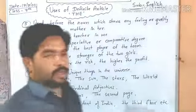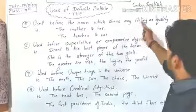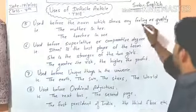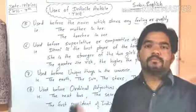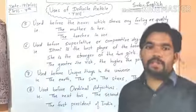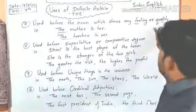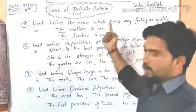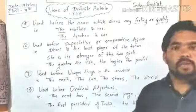The fifth use: 'the' is used before a noun which shows any feeling or quality — ऐसे noun के पहले जो कोई भावना या गुण को show करते हैं। For example: 'The mother in her' — उसके अंदर एक माँ है। 'The teacher in me' — मेरे अंदर एक शिक्षक है। So feelings and qualities are represented with 'the' — the mother in her, the teacher in me.